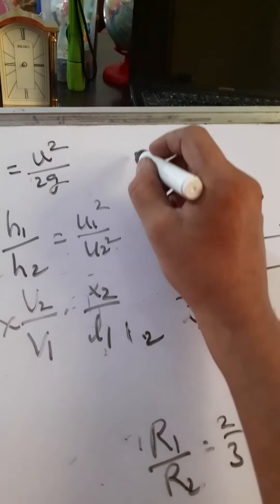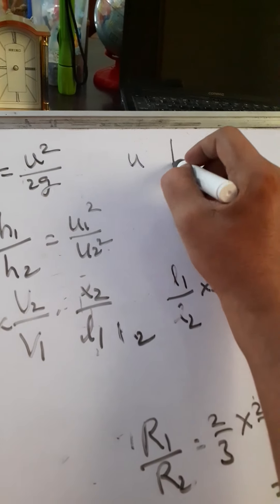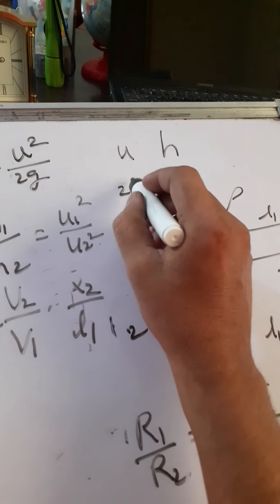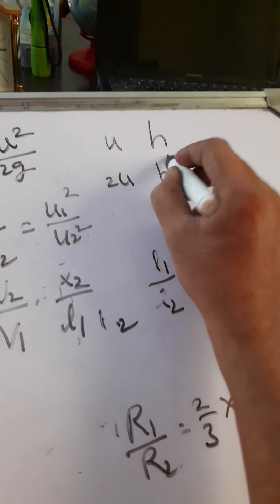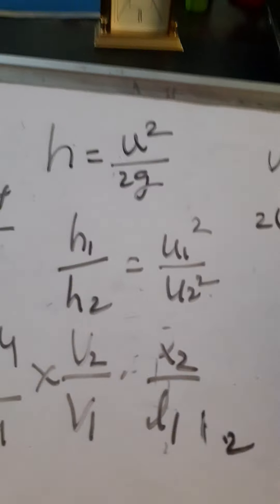Then a body projected with speed U rises to a height H. If it is projected with double the speed, what is the height raised? Then use this formula and substitute the data.